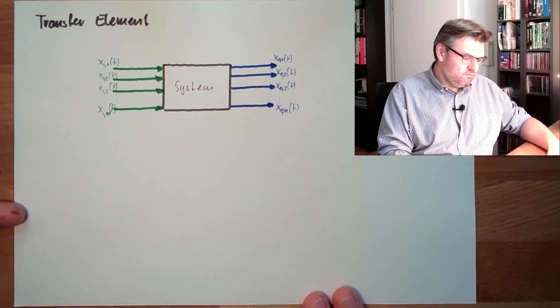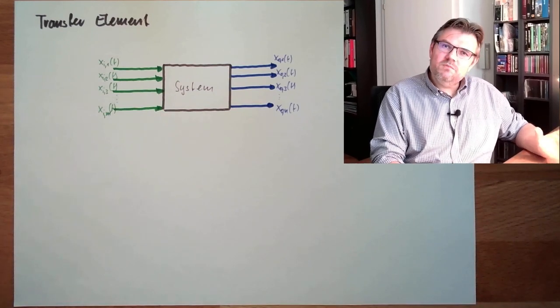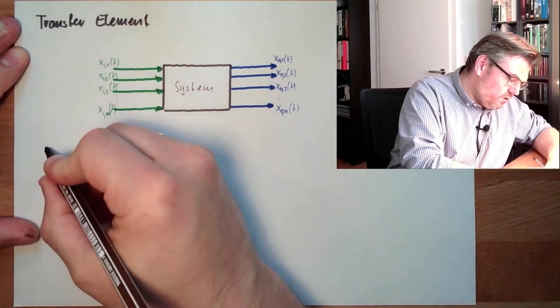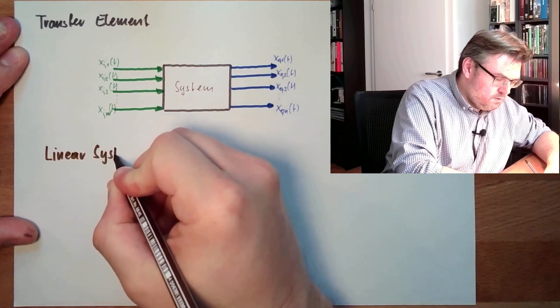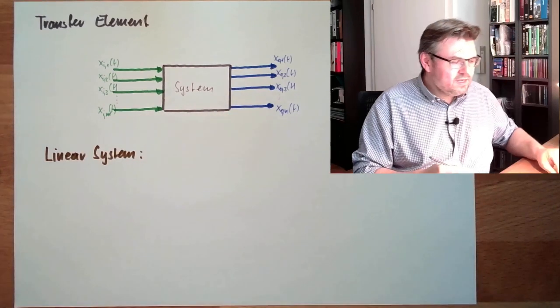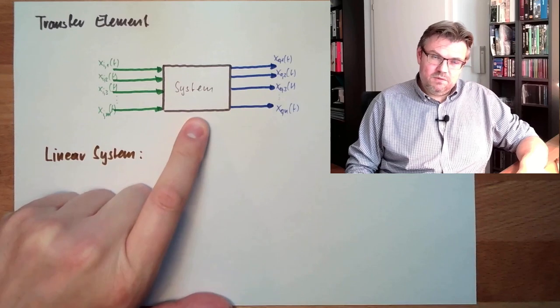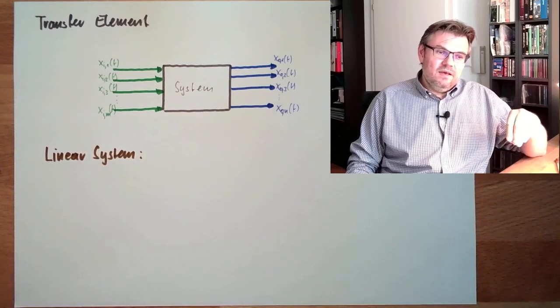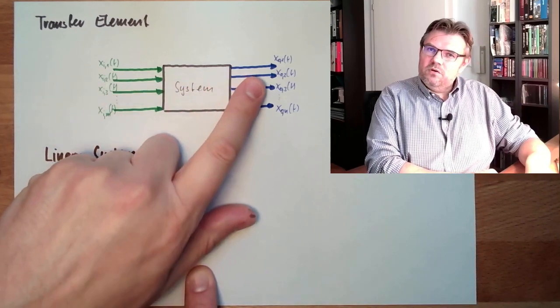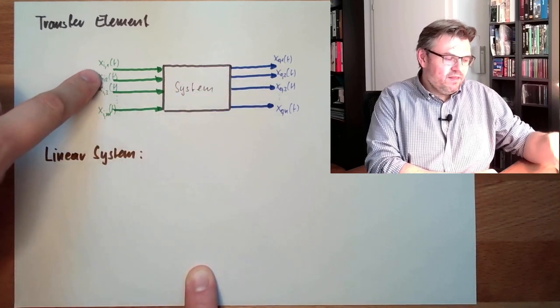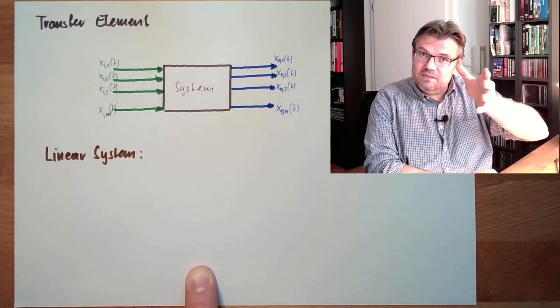One precondition or one item, one stuff, which the system needs to fulfill, it must be linear. So, we want to have a so-called linear system. What is a linear system? A linear system means that everything which is happening inside the system is just scaled. So, this means if I have some sort of input here, we will see a certain form of output. If I have the same form of input here, but double the size, I have the same form of output, but also double the size. So, it's just linear.